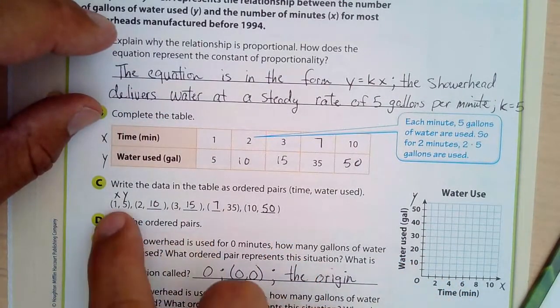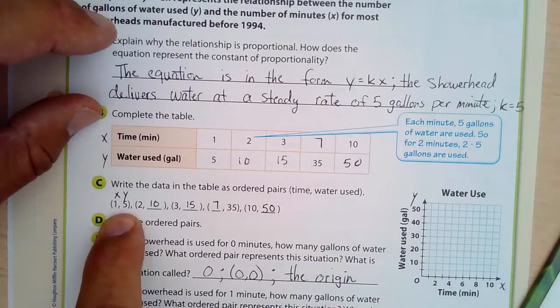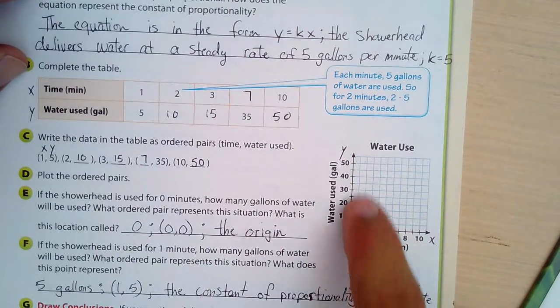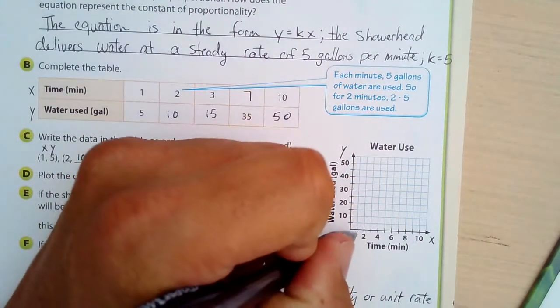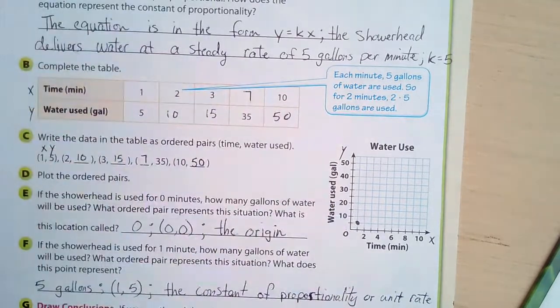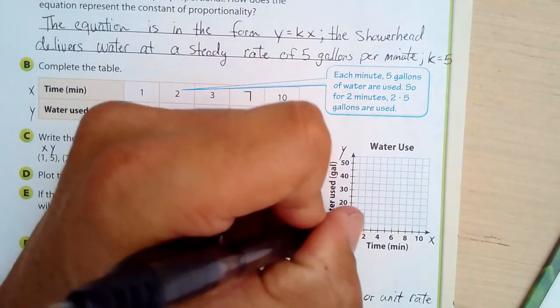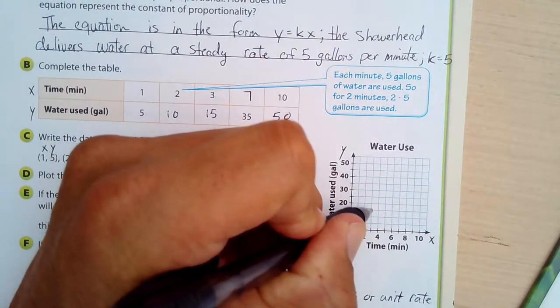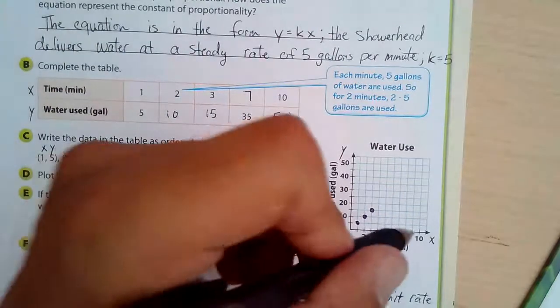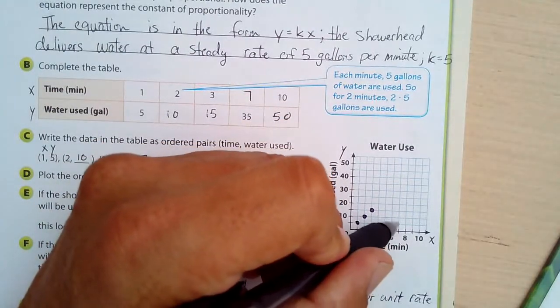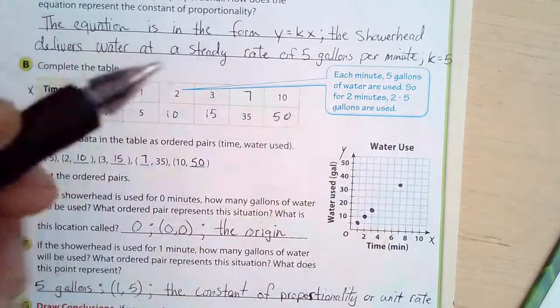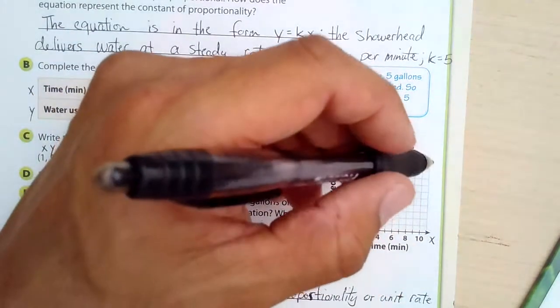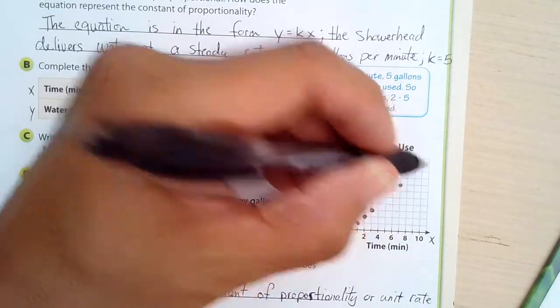So we're going to plot the ordered pairs. x is the horizontal and y is the vertical. So 1, 5 would be right there. 2, 10 here. 3, 15 there. 7, 35 is right here. And 10, 50 here.